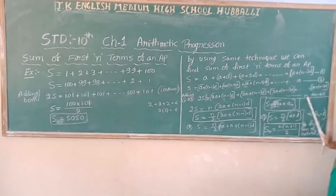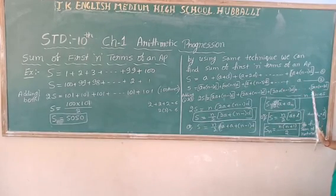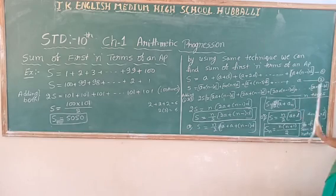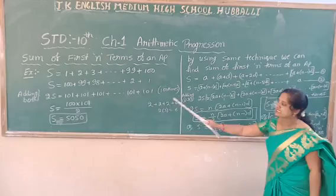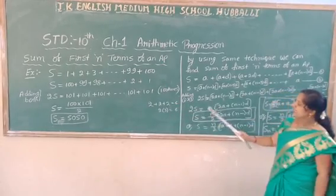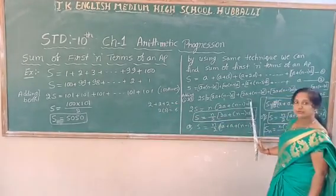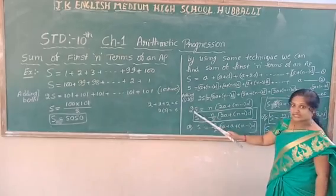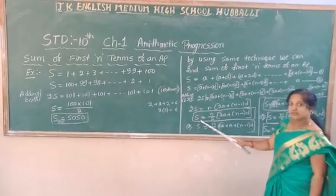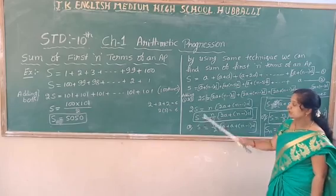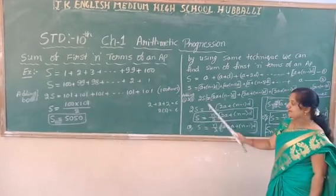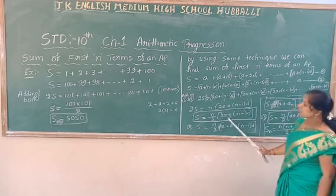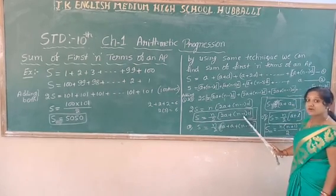So 2a plus n minus 1 into d repeats n times. The sum of all these is nothing but n into 2a plus n minus 1 into d. Then the 2 on the left gives: S sub n is equal to n by 2 into 2a plus n minus 1 into d. This is the general formula to find out the sum of n terms of an AP.